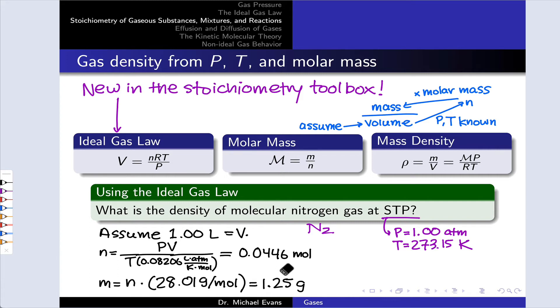Now, the mass corresponding to that number of moles is simply that number of moles times the molar mass of N2, 28.01 grams per mole. That comes out to 1.25 grams. But we assumed one liter of N2 gas, and so the density is 1.25 grams divided by one liter, or 1.25 grams per liter.